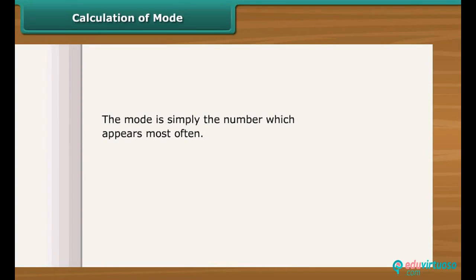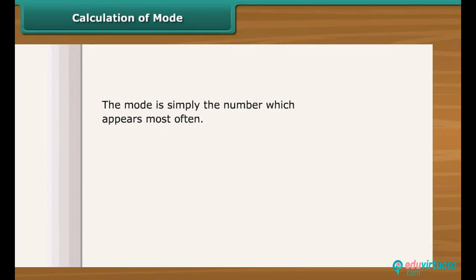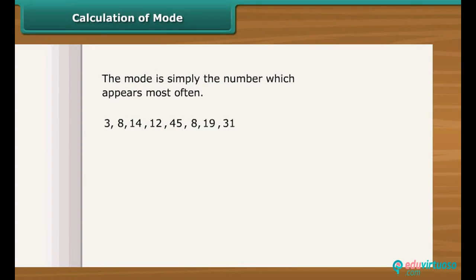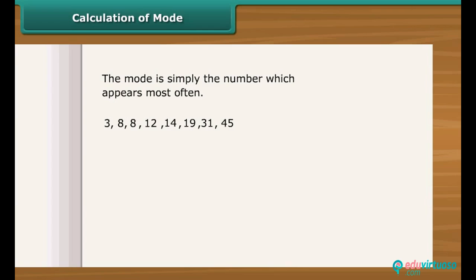The mode is simply the number which appears most often. See this example — we have a few numbers here. To find the mode, we need to first put the numbers in order, then count how many of each number. Now see which numbers appear most often. In this case, 8 appears two times, so the mode is 8.